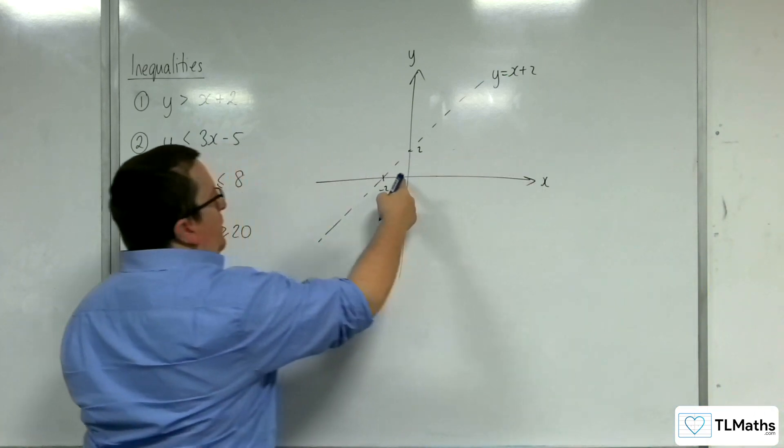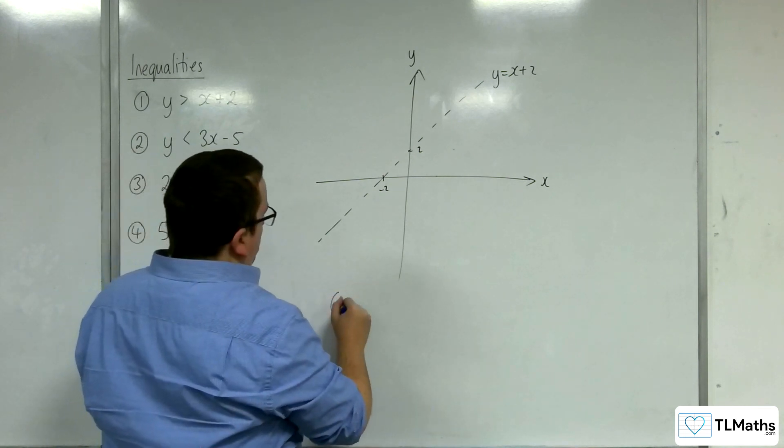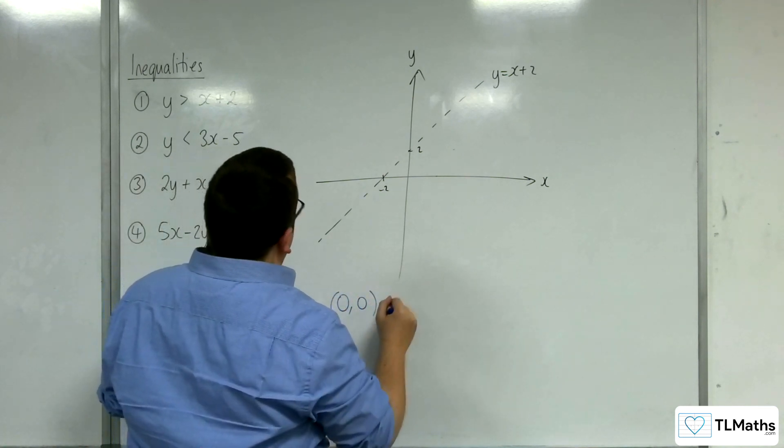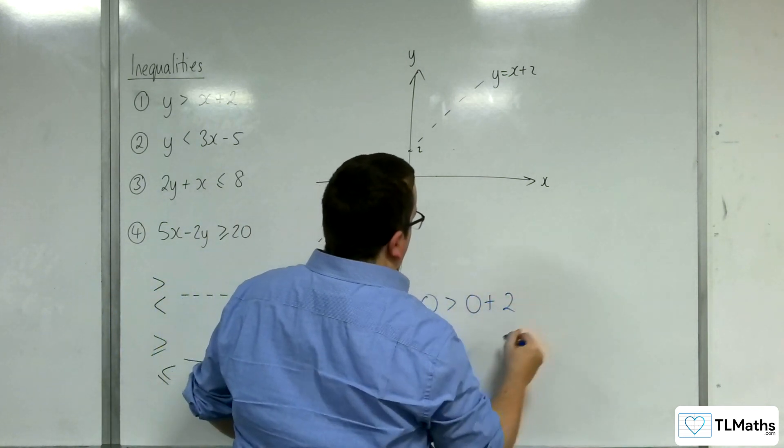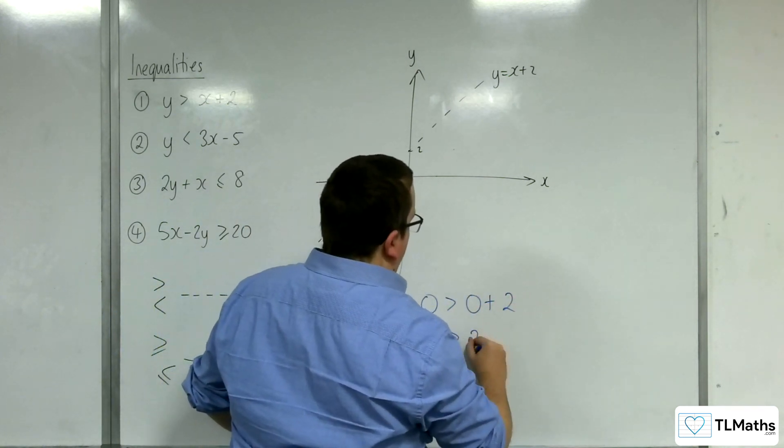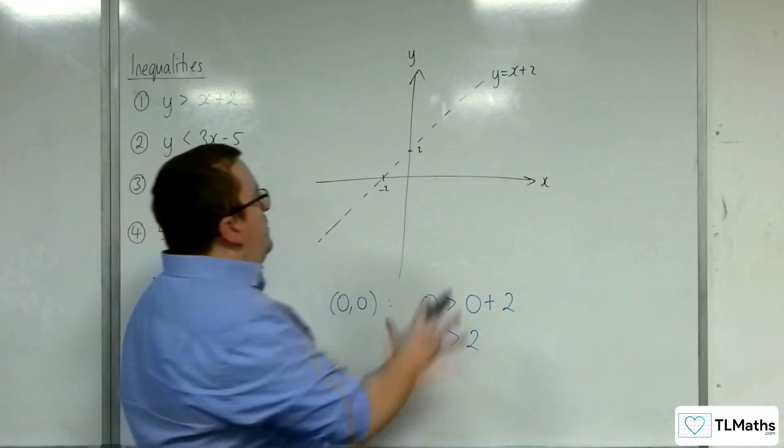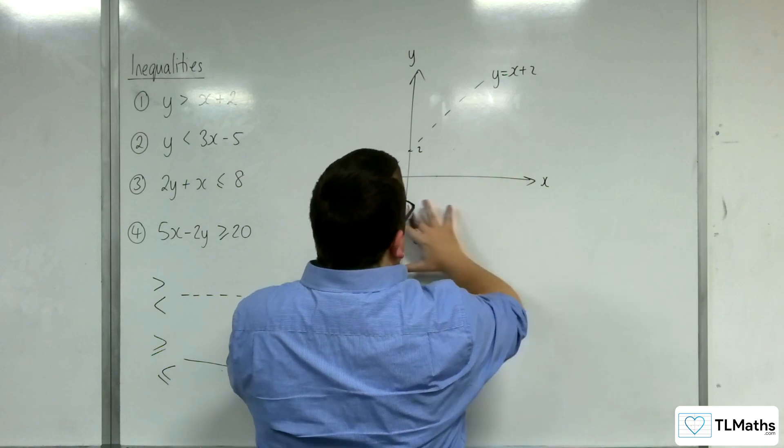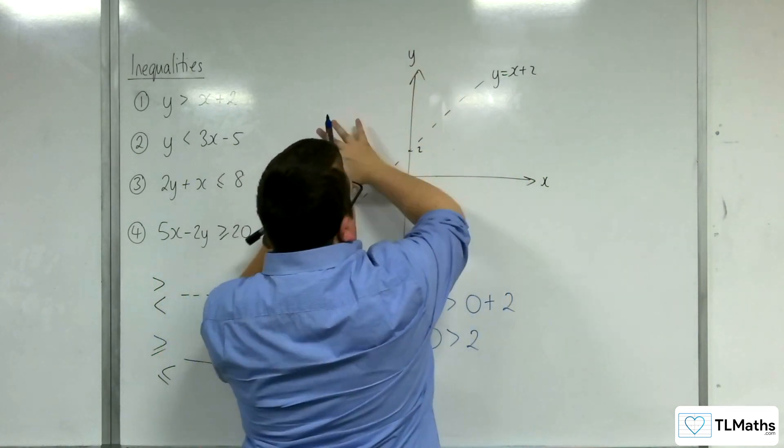So, quite often, I use the point 0,0 if the line or curve is not going through it. So, if we try 0,0, we get 0 is greater than 0 plus 2. So, 0 is greater than 2, which is obviously false. So, this is actually the region I don't want. I want this region.